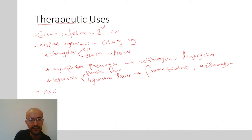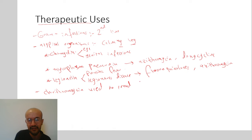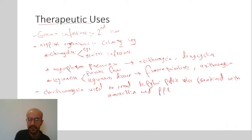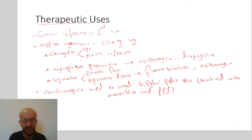Clarithromycin is used to treat H. pylori peptic ulcer disease. It is combined with amoxicillin and a proton pump inhibitor — this is called the triple regimen — to treat the peptic ulcer caused by H. pylori infection.